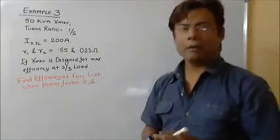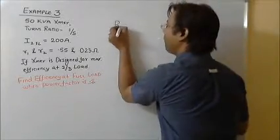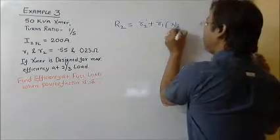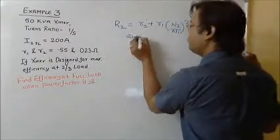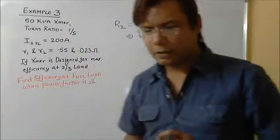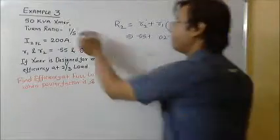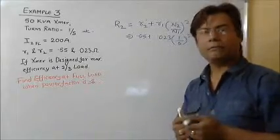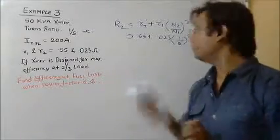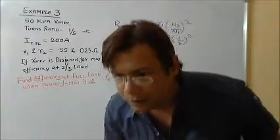First of all, we'll find what is the total resistance referred to the secondary. It is called R2 dash. What R2 dash would be exactly? R2 plus R1 times N2 by N1 squared. R2 is 0.055 plus 0.023, N2 by N1 will be 1/5 squared. So I will be getting R2 dash as 0.045 ohms.